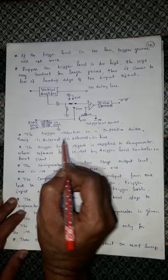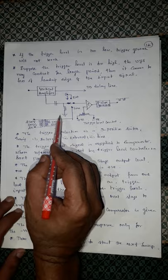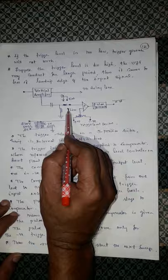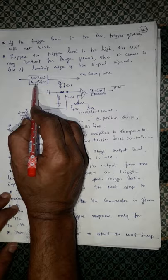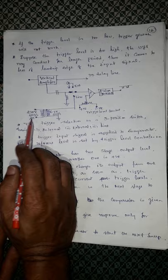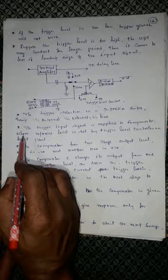There are three trigger source options: internal, external, and line. Line trigger means the signal is taken from the main supply. External means the sweep is initiated by another circuit. Internal means the sweep is synchronized with the input signal.